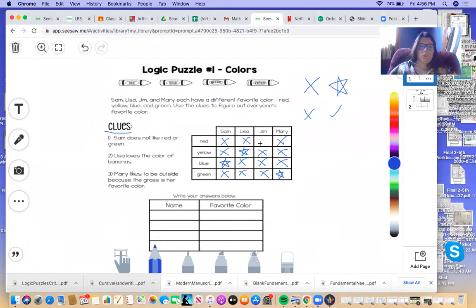And that leaves Jim. And his favorite color is red. And you can type your answers down here. I'm not able to type anymore. Every time I try to click the T, it crashes my computer for some reason.